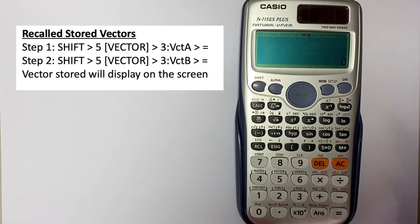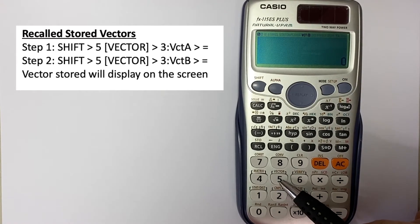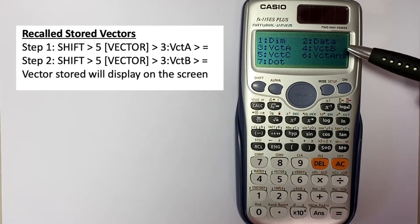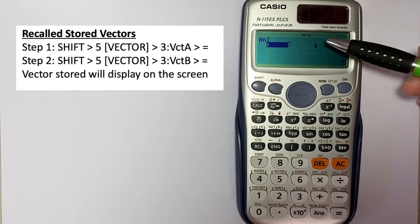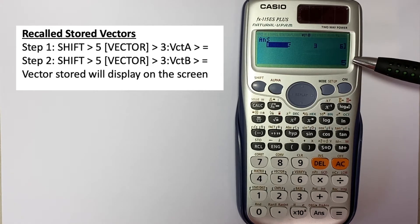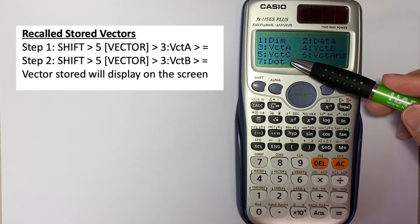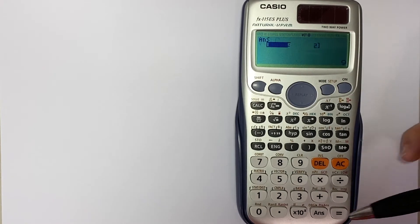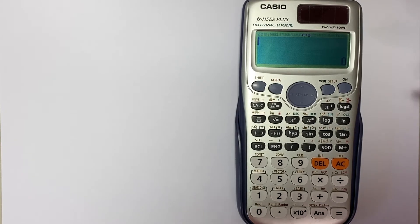To retrieve the vectors we just stored, go to Shift and then number 5. Select B (number 4) and press Enter — here is the three-unit vector ijk we stored. To look at vector C, select number 5 and press Equal — that's the two-unit ij vector we just stored.